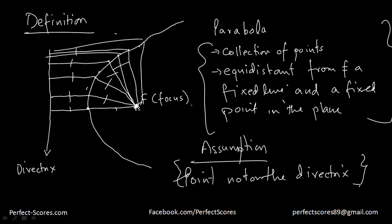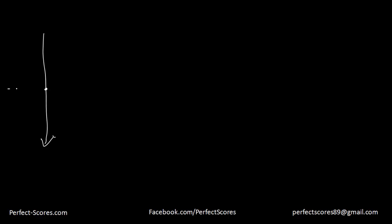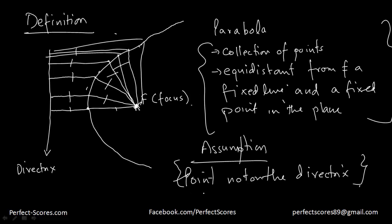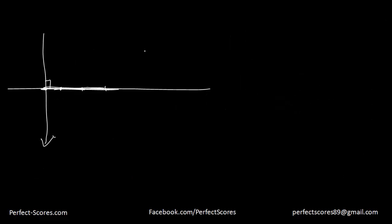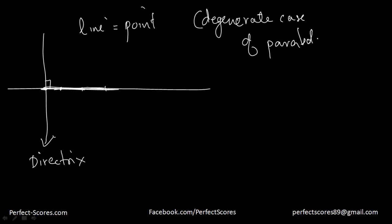Now, what if the point lies on the directrix? If the point is on the directrix and we apply the definition — a collection of points equidistant from the point and the line — then you're going to get a perpendicular line instead of a parabola. That means you're not going to get a parabola if this assumption is violated. This case is actually called the degenerate case of a parabola.